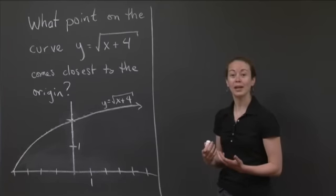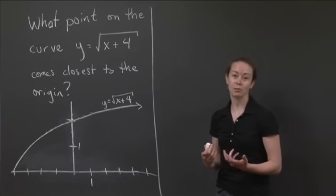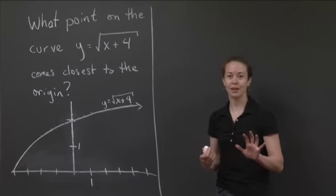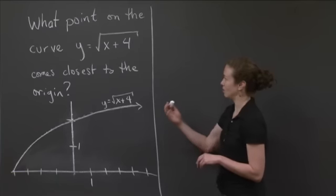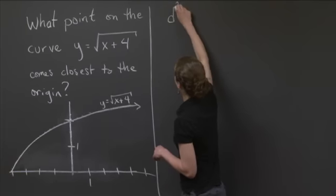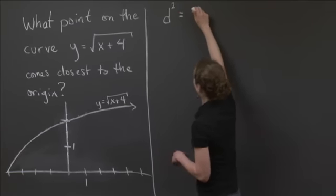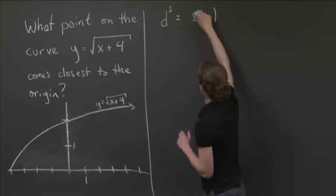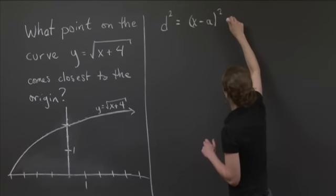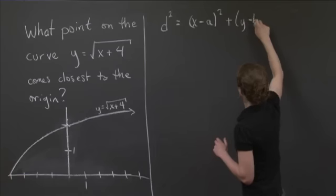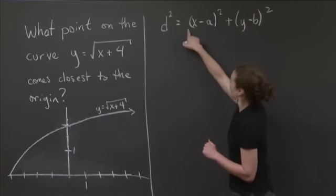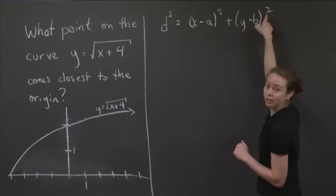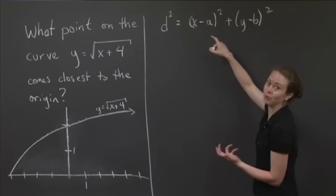One point I want to make is that if you want to optimize distance, you might as well optimize the square of distance because it's much easier. So let me justify that briefly. I want to optimize the distance squared to the origin. Distance, you remember, between two points x, y and a, b is in this form. Distance squared is the difference between the x values squared plus the difference between the y values squared. This should remind you of the Pythagorean theorem.